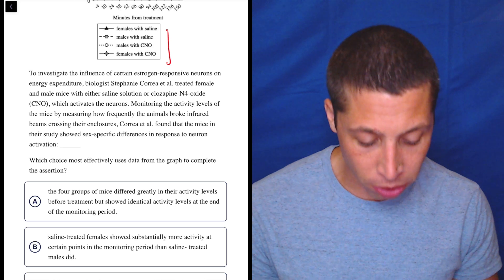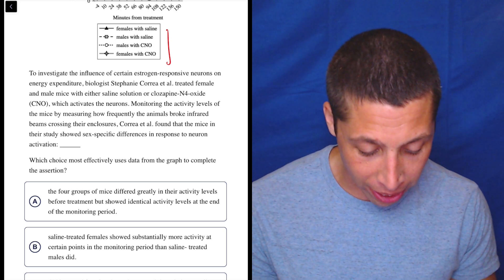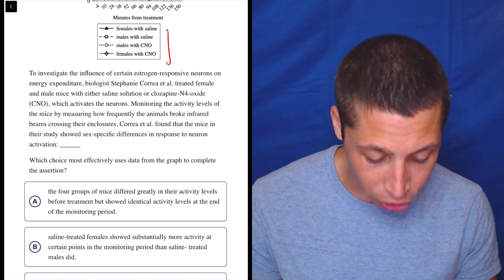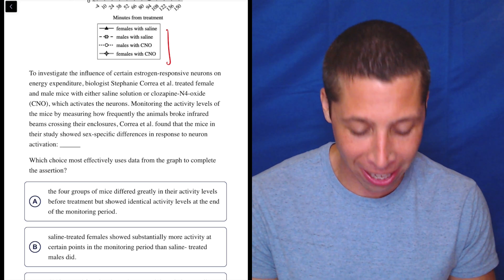To investigate the influence of certain estrogen responsive neurons on energy expenditure, biologist Stephanie Correa et al. treated female and male mice with either saline solution or clozapine N4 oxide, CNO, which activates the neurons.